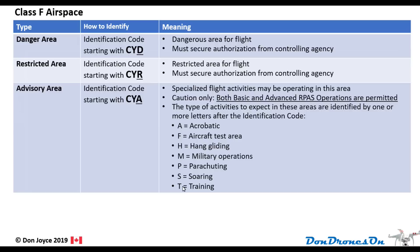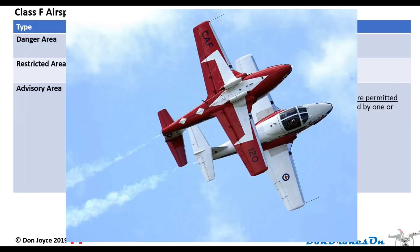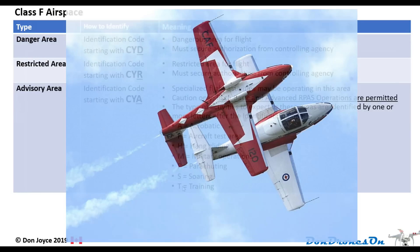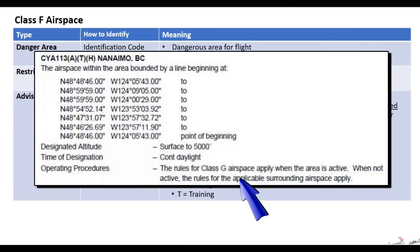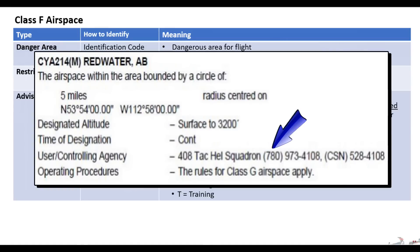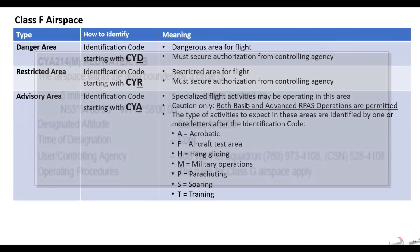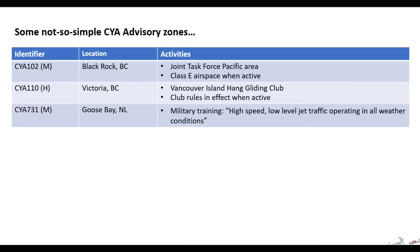The danger is that it could be very difficult to detect silent aircraft like hang gliders or sailplanes, or fast-moving military or acrobatic aircraft. For the most part, CYA zones are treated as class G uncontrolled airspace, even when they're active. Some but not all have a contact number and authorizing agency. If there is a contact number, I would strongly recommend you call before you fly.